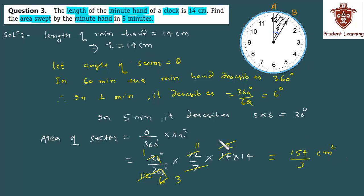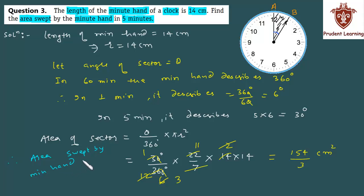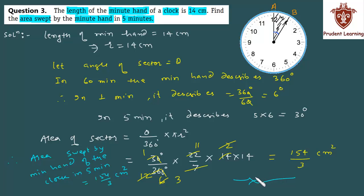Kyunki length centimeter mein tha, unit centimeter square hoga. Ye jo minute hand hai woh five minutes mein 154/3 cm² area sweep karta hai. Therefore, area swept by the minute hand of the clock in five minutes is 154/3 cm². This completes our solution.